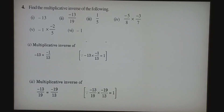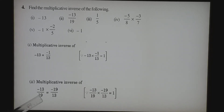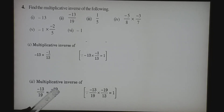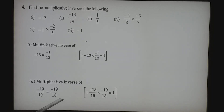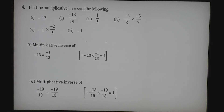Second question: multiplicative inverse of minus 13 by 19. Again, multiplicative inverse means reciprocal — without disturbing the sign, we change the position of numerator and denominator. The numerator becomes the denominator and the denominator becomes the numerator, but we do not show the denominator with a negative sign. So we multiply both numerator and denominator by minus 1. The answer becomes minus 19 by 13.